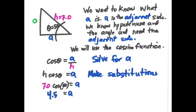In this example, we want to know what the adjacent side is. We know the hypotenuse and we know the angle. We use the cosine function and solve for the adjacent side, because cosine of the angle equals the adjacent side divided by the hypotenuse. Multiplying H on both sides gives us: hypotenuse times cosine of theta equals the adjacent side A. So 7 times cosine of 50 equals A, which gives us 4.5.